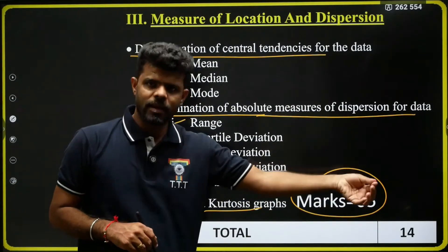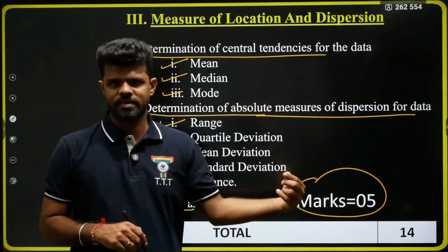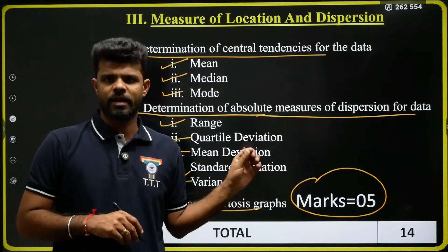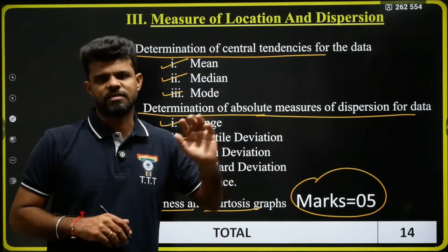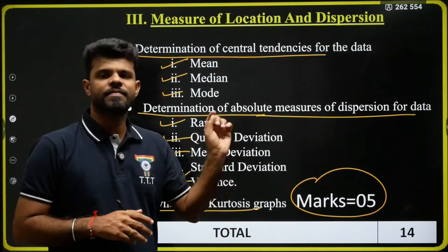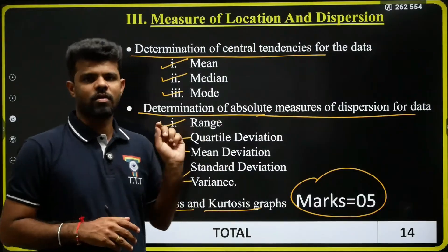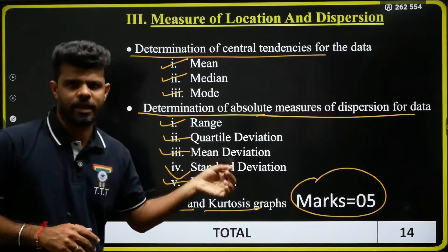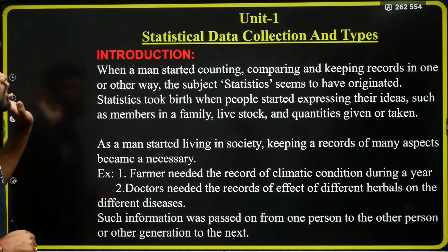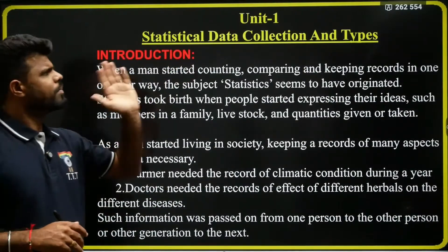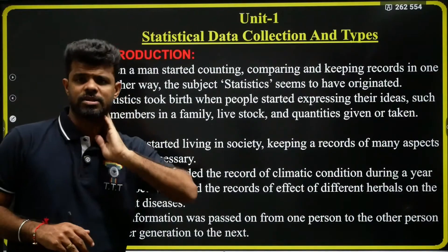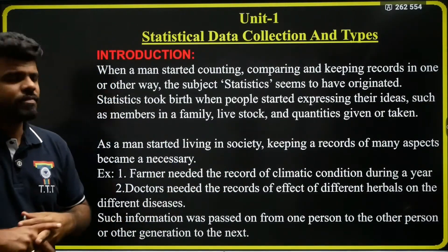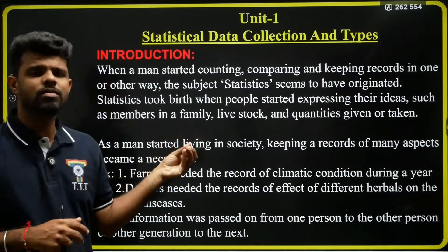In the first three chapters you will get around 40 marks total. The last chapter is the Python chapter, in which you will get around six marks. Now we will start with the first chapter — Data Collection and Types. Before starting, we will discuss how statistics originated.